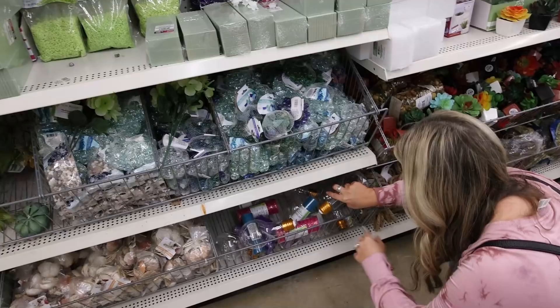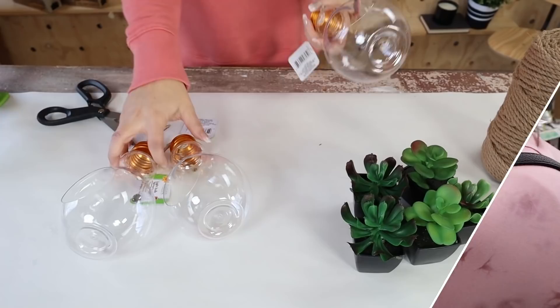I love this time of year at Dollar Tree because they have out all of their new home decor items for the year. I was excited to find these little terrariums. They look like light bulbs. I really couldn't figure them out, but I knew I had to get three of them.